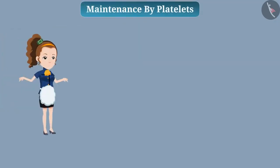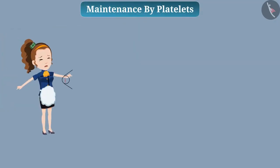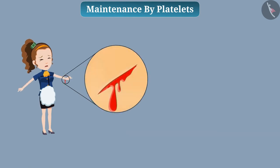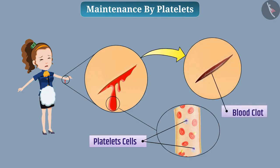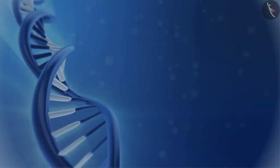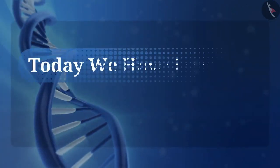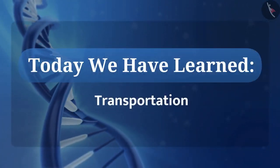When we get hurt, platelets in the blood help stop the bleeding. These cells make a blood clot at the place of bleeding and stop the bleeding. Today we learned about transportation.